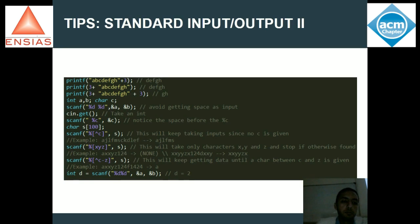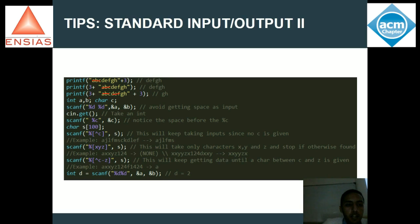Des petits astuces qui peuvent être bénéfiques. Par exemple, avec printf, si j'ai une chaîne de caractères et que j'ai dit plus 3, j'élimine les 3 premiers caractères. De même, si je fais plus 3 ici, ce n'est pas le dernier. Cette fois-ci, j'ai fait ODB au dernier, donc je vais supprimer 3, je vais supprimer encore 3. J'ai fait 3 variables : 2 entiers et 1 caractère.